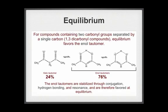For compounds containing two carbonyl groups separated by a single carbon, also known as 1,3-dicarbonyl compounds, equilibrium favors the enol tautomer. The enol tautomers are stabilized through conjugation, the ability to form hydrogen bonds and resonance, and are therefore favored at equilibrium.